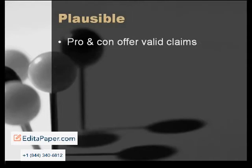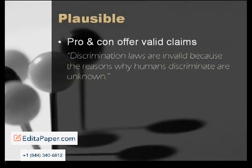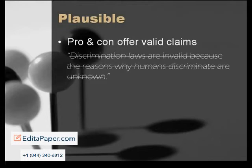Consider this claim: discrimination laws are invalid because the reasons why humans discriminate are unknown. While some human behavior is indeed a mystery, that is not a valid reason for negating our laws against discrimination. This lack of plausibility calls into question a paper topic that tries to argue the invalidity of discrimination law. It's difficult to offer plausible claims for that position, although it is debatable.